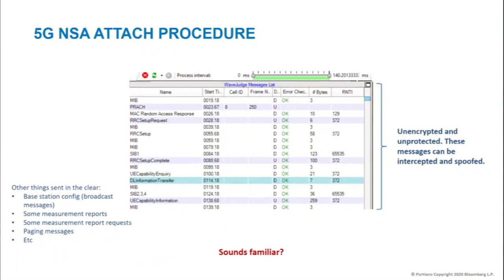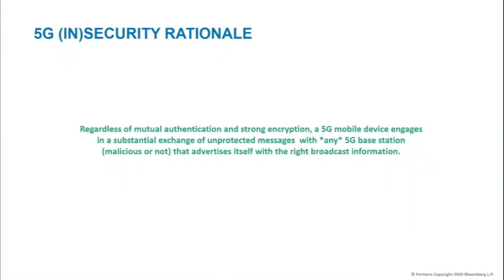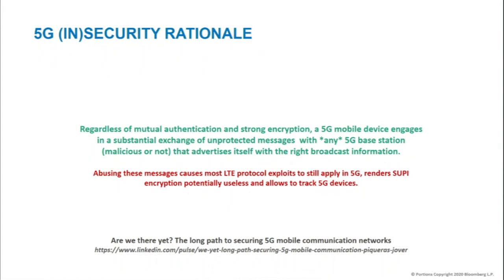So it's very likely we're going to have the same issues as in LTE — and that's my tagline for this talk: when we talk about 5G, regardless of mutual authentication or encryption, any 5G mobile device will engage in a substantial exchange of unprotected messages with any 5G base station that advertises itself with the right broadcast information — whether it's a legitimate station or not. That right broadcast information is broadcast in the clear. What was an issue in LTE is now an issue in 5G — exactly the same problem. By abusing these pre-authentication messages, most of the LTE exploits from four years ago and the last three years also apply to 5G. This also renders SUCI encryption potentially useless and still allows you to track devices.